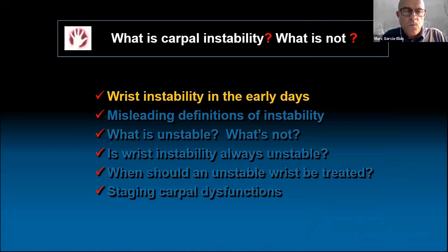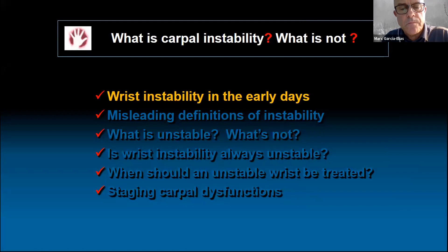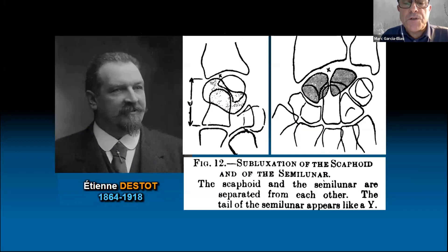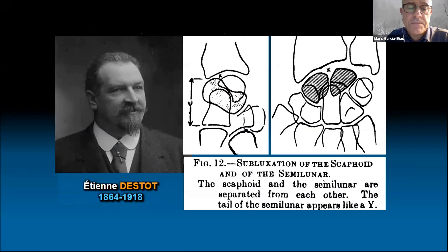Let's concentrate on the term instability — my subject today. When was it first used? What was the meaning back then? The store from Dijon, born in Dijon but later professor of radiology in Lyon, France, was the first to describe a case where the scaphoid and lunate were separated from each other. It was in the book Traumatismes du Poignet of 1923. He did not use the word instability, but the more descriptive term of subluxation, which is fine.